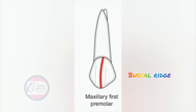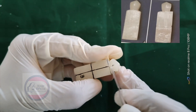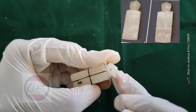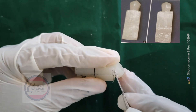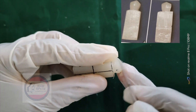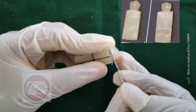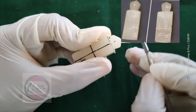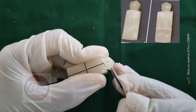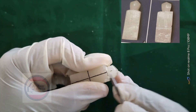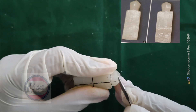The buccal surface of the tooth runs cervico-occlusally approximately in the center of the crown. To make a buccal ridge, reduce the wax on either side of the midline. Similarly, make a palatal ridge on the palatal aspect of the crown.